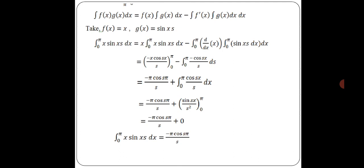Using integration by parts with f(x) = x and g(x) = sin(sx): integral from 0 to π of x sin(sx) dx = x · (-cos(sx)/s) from 0 to π - integral from 0 to π of (-cos(sx)/s) dx. This equals -π cos(sπ)/s + (1/s) integral from 0 to π of cos(sx) dx. The second integral evaluates to 0, so the result is -π cos(sπ)/s.